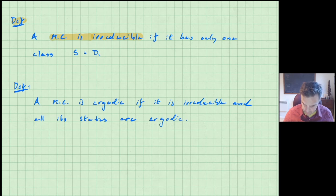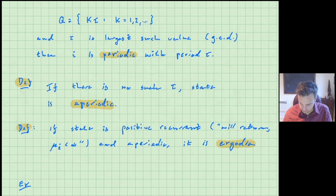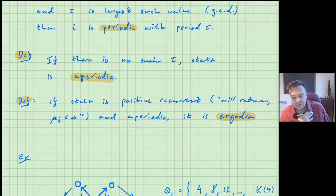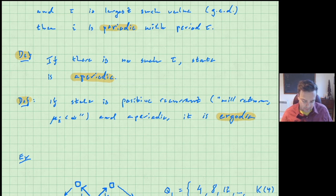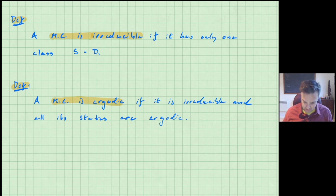A state is ergodic if it's positive recurrent — meaning you will return to it in finite time — and it's aperiodic. So if all the states in a chain fit that description and they're all in one communicating class, then we say that the chain is ergodic.